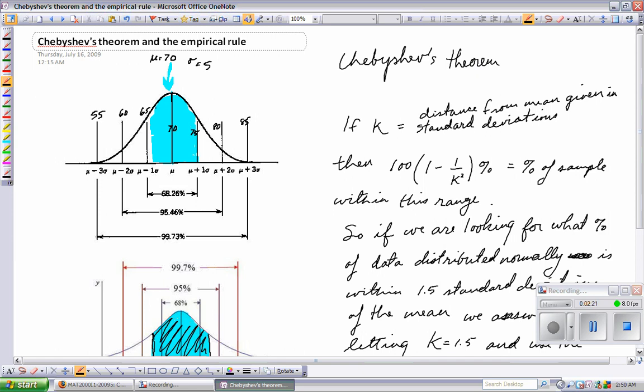Now, assuming the scores were normally distributed, what this information would tell you, according to the empirical rule, is that 68% of students scored between a 65 and a 75. You can see right down here at the bottom that 68% are within one standard deviation of the mean, which is right in the center.